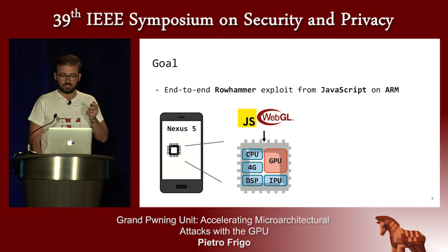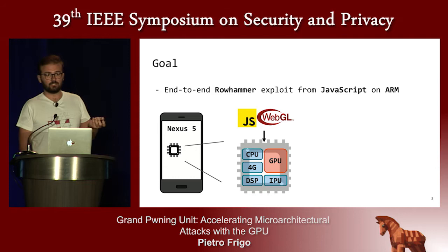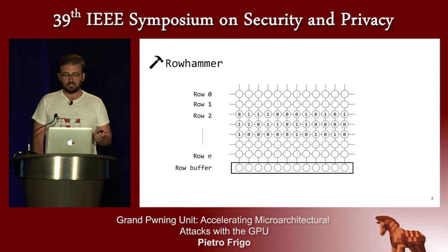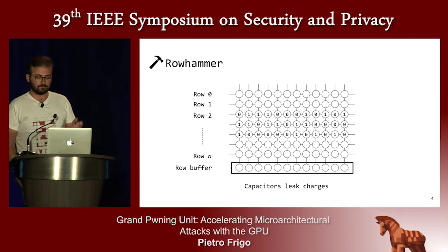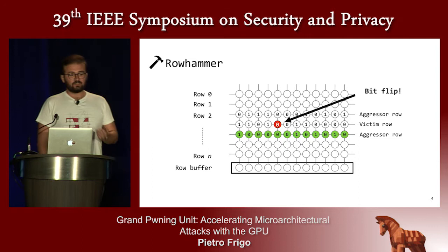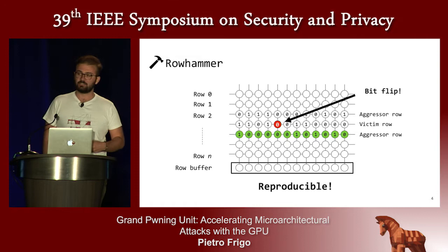Our test device was a Nexus 5. Rowhammer is a bug that affects most modern DRAM chips. It relies on the fact that capacitors storing data in DRAM leak charges over time. Researchers discovered that if you access memory following a specific pattern — choosing two aggressor rows with a victim row in the middle — and you do it fast enough, you may be able to trigger bit flips. These bit flips are reproducible, so once you find one you can use it later to compromise sensitive data.